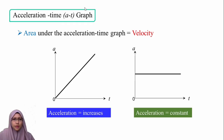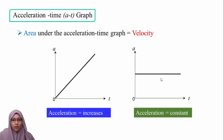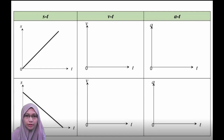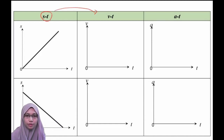For the acceleration-versus-time graph, the area under the graph equals velocity. We can analyse that the acceleration is increasing in one case, and in another graph the acceleration is constant. To have a clear understanding, let's see how the displacement-against-time graph is converted into the velocity-against-time graph, and then into the acceleration-against-time graph.